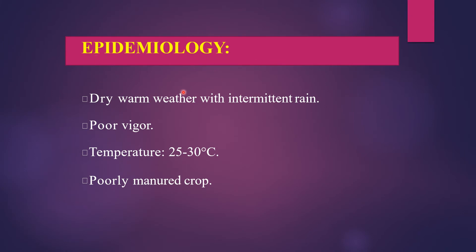The epidemiology of early blight disease of tomato: it is favored by dry warm weather with intermittent rain, poor plant vigor, temperatures of 25–30°C, and a poorly manured crop. These are some of the key epidemiological factors.